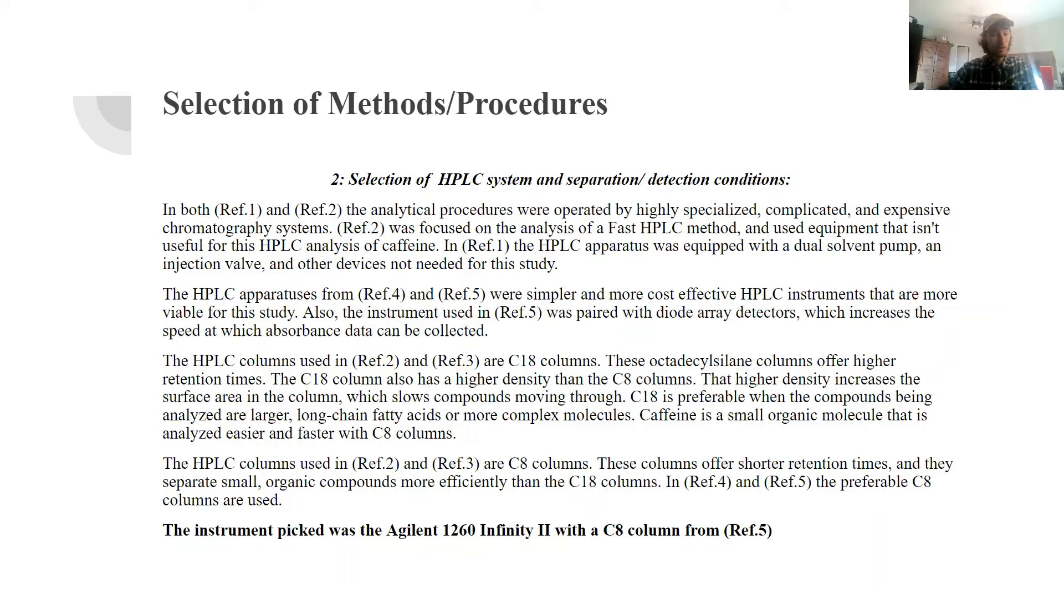Caffeine, however, is a small organic molecule that is analyzed faster and more efficiently with C8 columns. The HPLC columns used in reference 2 and reference 3 are both the C8 columns. These columns offer shorter retention times, they separate small organic molecules, and they're going to be more efficient overall than the C18 system for the use that we are doing in this study.